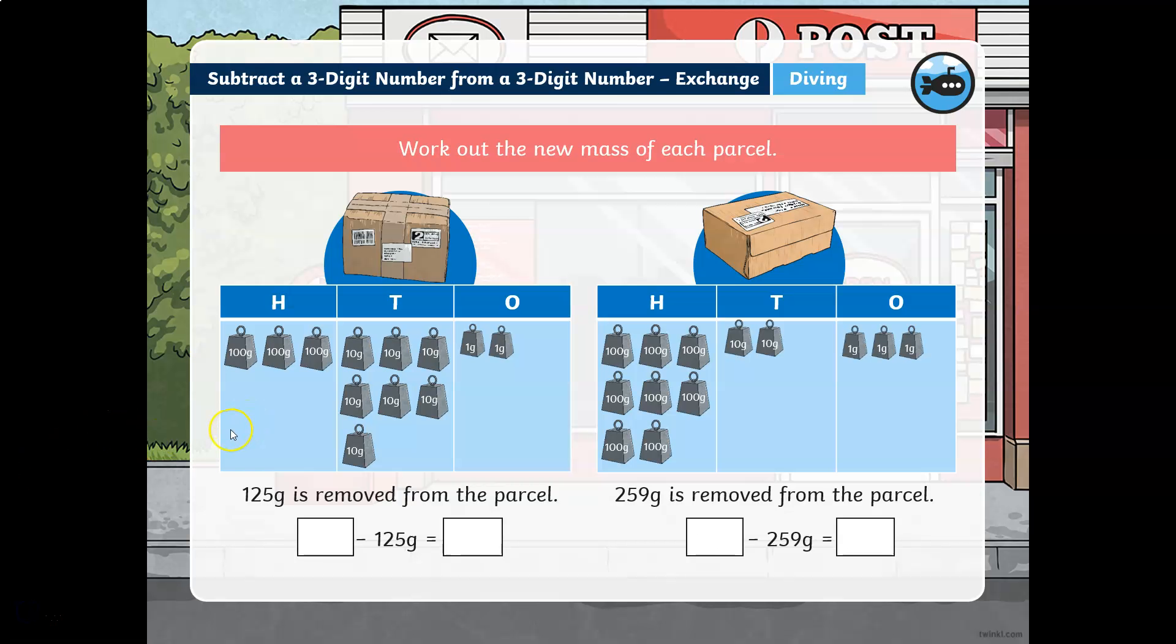Okay, here we have two different math problems. First, we need to decide what this number is. We have the different place values, the hundreds, tens, and ones. So in the hundreds, we have three hundreds. In the tens, we have one, two, three, four, five, six, seven tens. And in the ones, we have two ones. So this number needs to look like this. Do you see? Three, seven, and two.